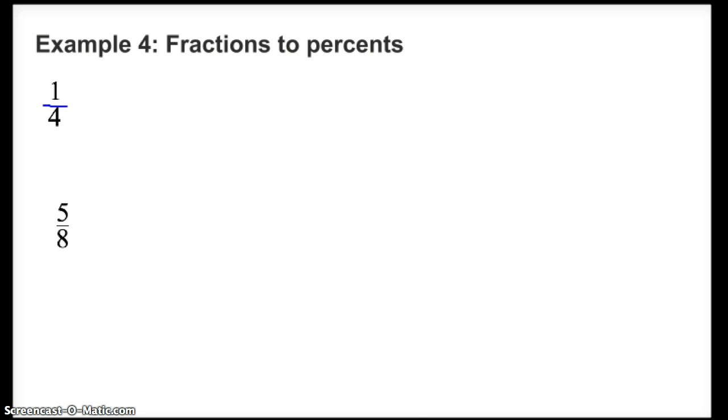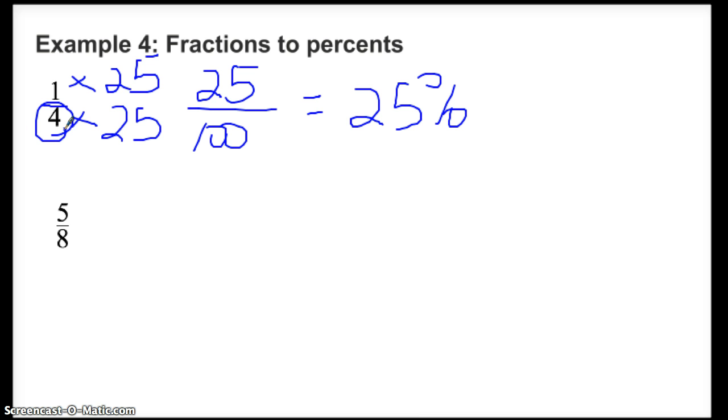So the first example is 1/4. The first thing I want to do is see if the denominator here has a multiple that's 100. And in this particular case, we do. I can multiply 4 times 25, and that gives me 100. Then I multiply 1 times 25 to keep it equivalent, and that gives me 25. So because a percent is out of 100, I'm already set up. 25 out of 100 is 25%. That's what works. So that's an easy way. If you could get this denominator that is a multiple of 100, where you can multiply it by something to get 100, you're in great shape.